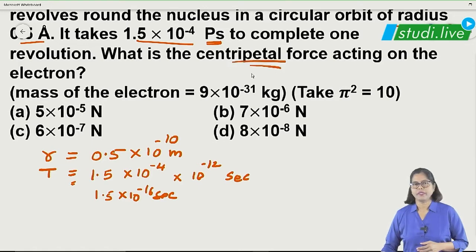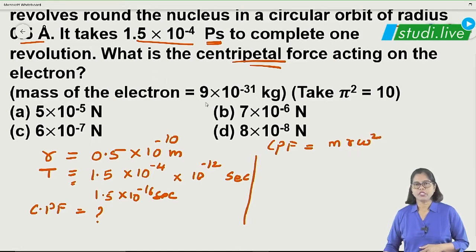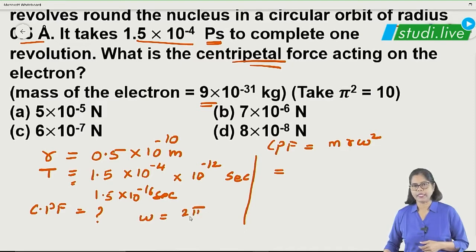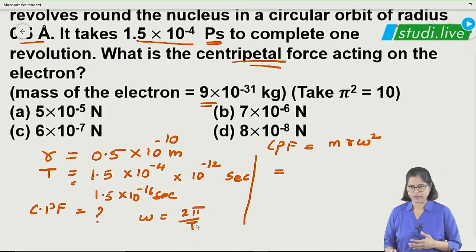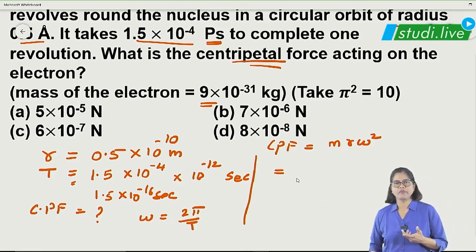It is asked to calculate the centripetal force. The centripetal force formula is CPF equals M R omega squared, where omega equals 2π divided by T. Mass M is given as 9 into 10 raised to minus 31 kg. Radius can be written as 5 into 10 raised to minus 11 meters. Substituting, omega squared becomes 4π squared upon T squared.